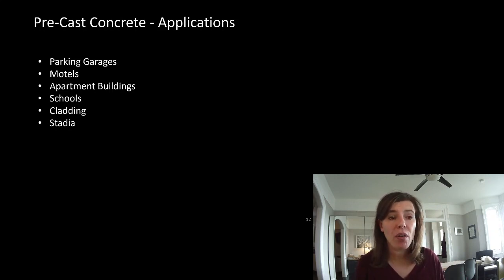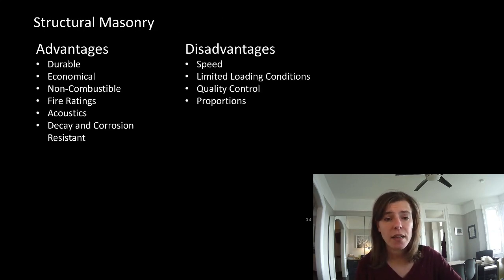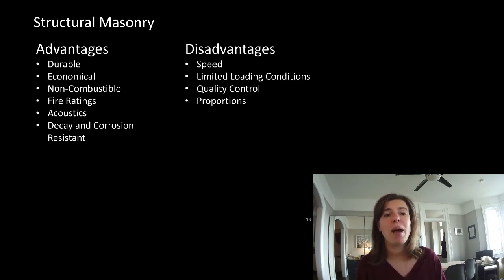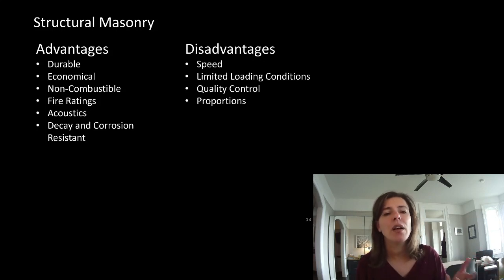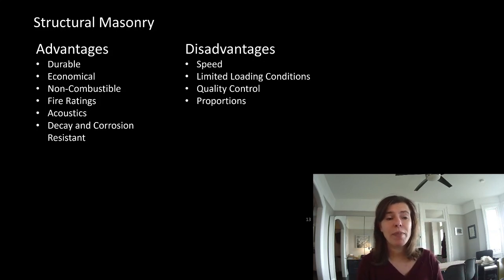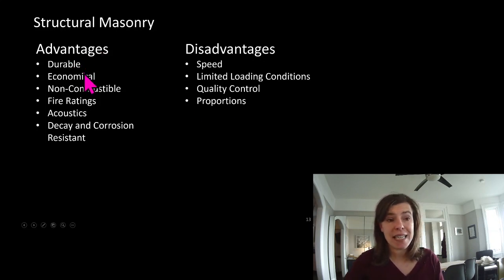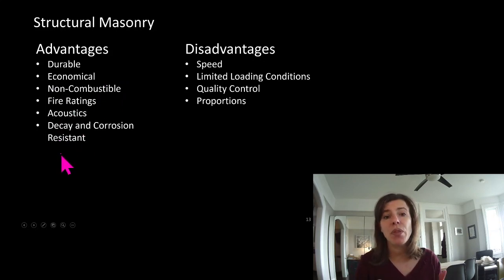Precast concrete is really good for parking garages, motels, apartment buildings, schools, cladding - which is its big one - and stadium elements. You don't have to memorize these; the exam will be open book and you can come back and look at these lists. Stop and think about what types of buildings you've seen in each of these materials - this list is just a formalization of what you already tend to know. Masonry isn't used very much anymore, but it's nice to know because it can fit in for some projects. It's durable, economical, very cheap, non-combustible with good fire rating, and has good acoustics and corrosion resistance - similar to what we saw with concrete.